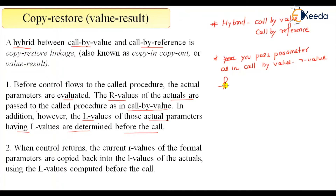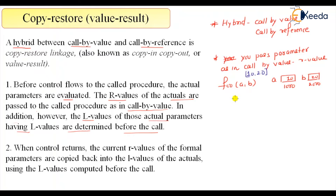Suppose my call is something like foo(A, B), and suppose A's value is 10 with L-value (location) 1000, and B is 20 with location 2000. Then we will pass 10 and 20 strictly — we pass only the R-values. But additionally, we will compute the L-values: location of A is 1000 and location of B is 2000. This computation is additional.